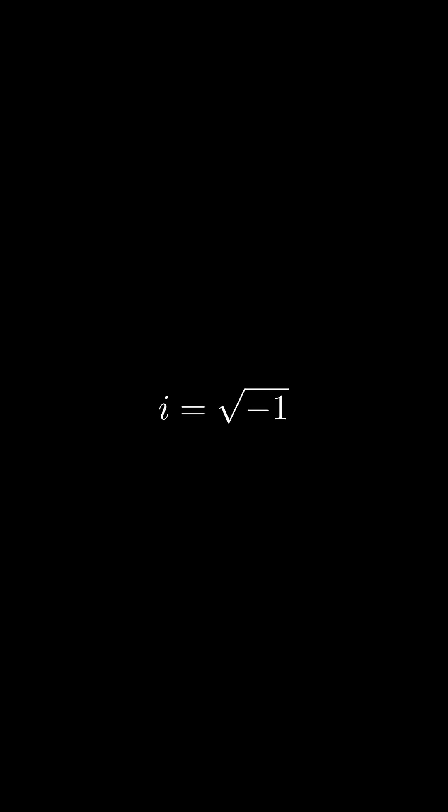A lot of you may know that the square root of negative 1 is the imaginary number i. And some of you may even know Euler's identity, or that e to the i pi equals negative 1. But what is i to the power of i?